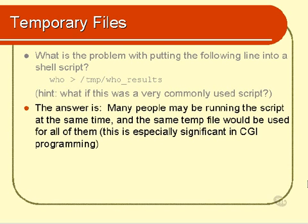There actually may be many people running the script at the same time, in which case they'd all be running the same line of code. Which means that several people would be trying to write their details, whatever those details happen to be, to a file in the temp directory called 'who_results'. And somebody else might be deleting the file because the shell script may go on and delete the file a bit later on. So someone might be deleting the file while the other person has just written to it, and all sorts of errors could come up. We might have several people all trying to deal with the same data and all thinking that it's different data.